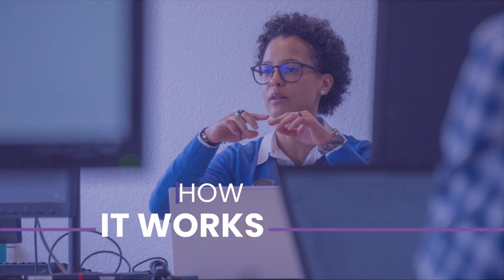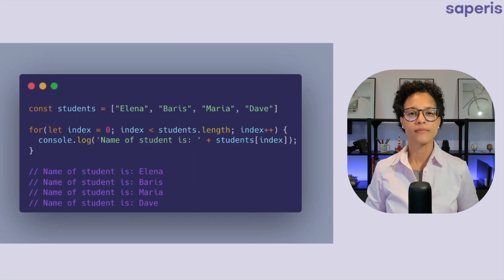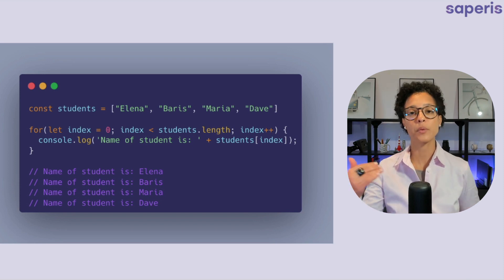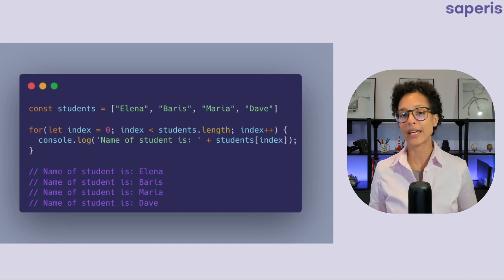How it works. On screen you see an example of a traditional for loop that we use to loop over the students array and it gives us the output of name of student is and then the respective element or name in our array.